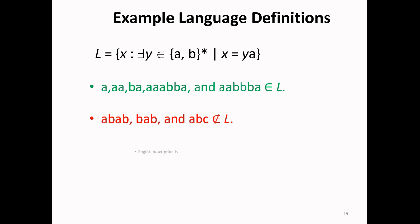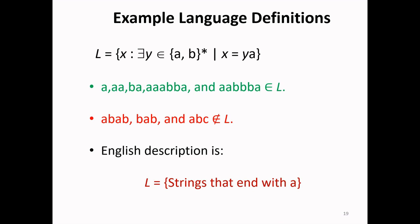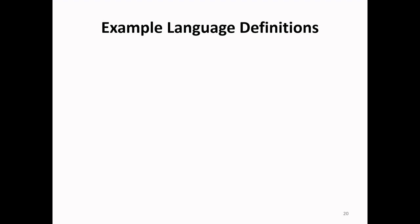So if I want to know the description of this language in English, I can make the statement that this language consists of all possible strings over alphabet AB ending with A. Strings ending with A are accepted, whereas strings not ending with A are rejected. In this way we can write an English description for languages.